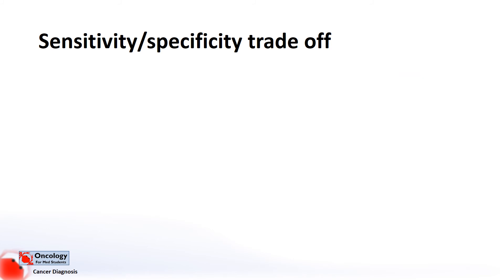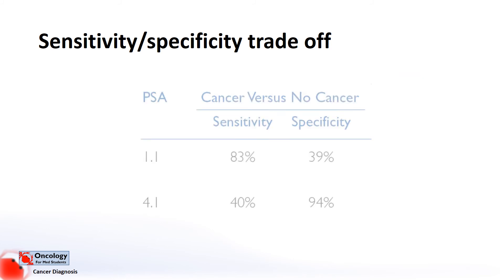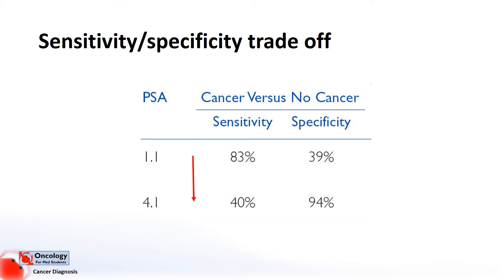Just to convince you that this is what happens in real life, here is an example of what happens with a PSA test as the threshold for a positive test is increased. This table shows that as the PSA cutoff increases, the test becomes more specific but less sensitive.